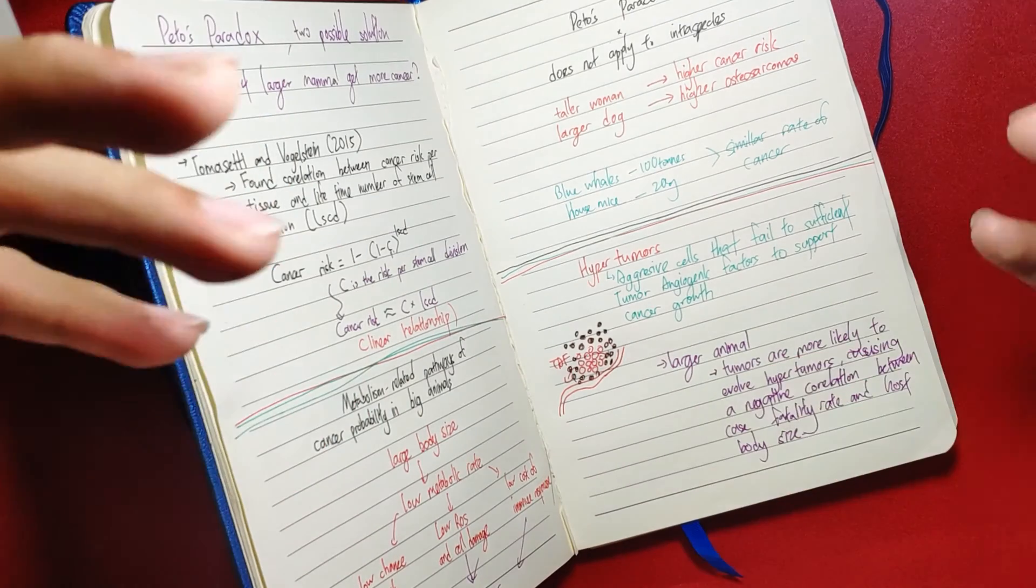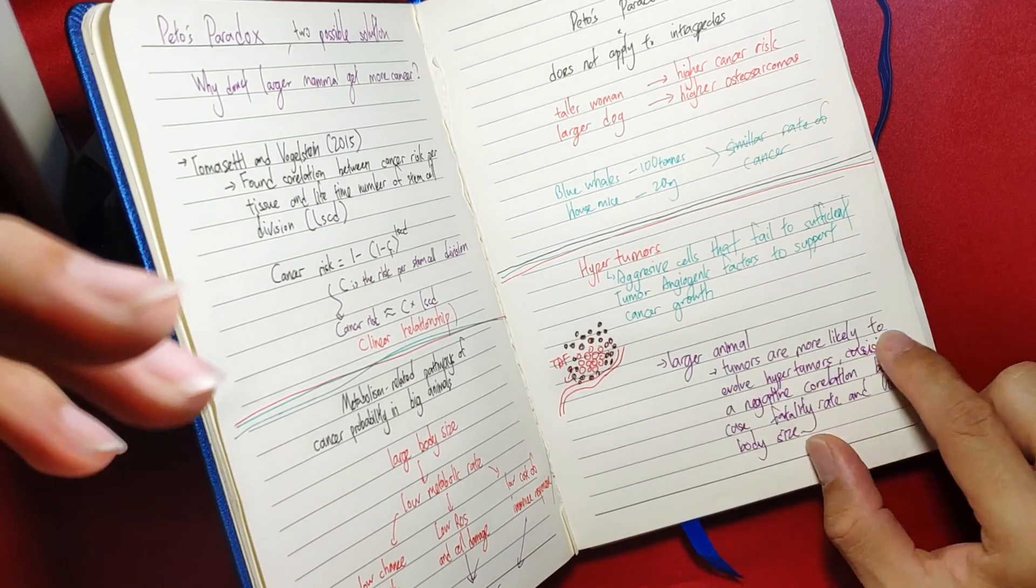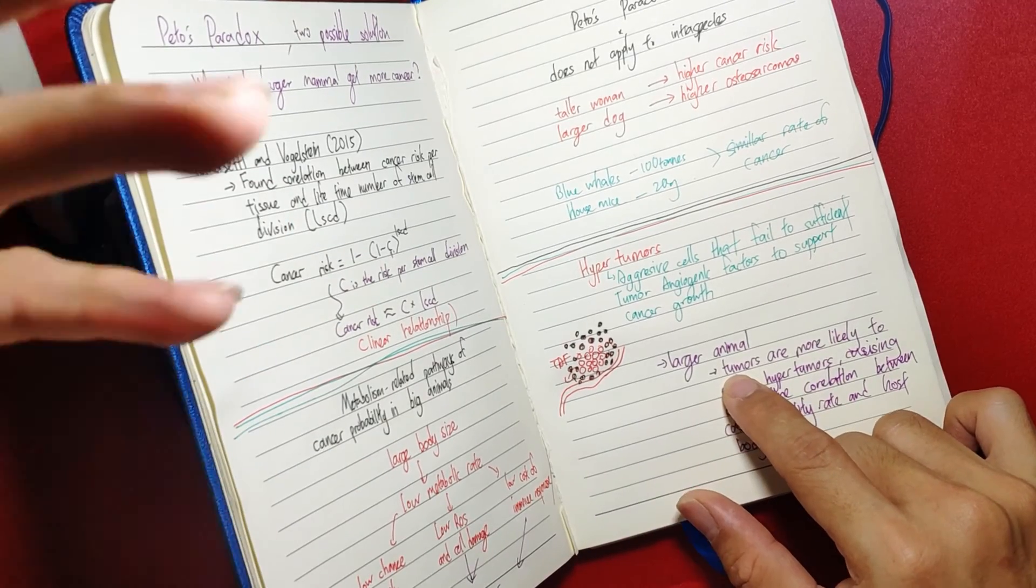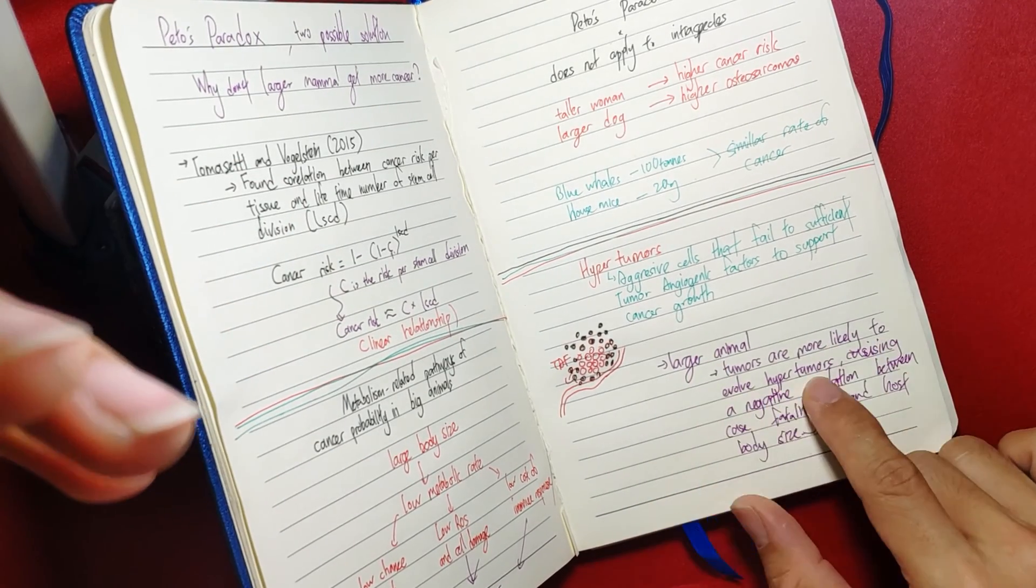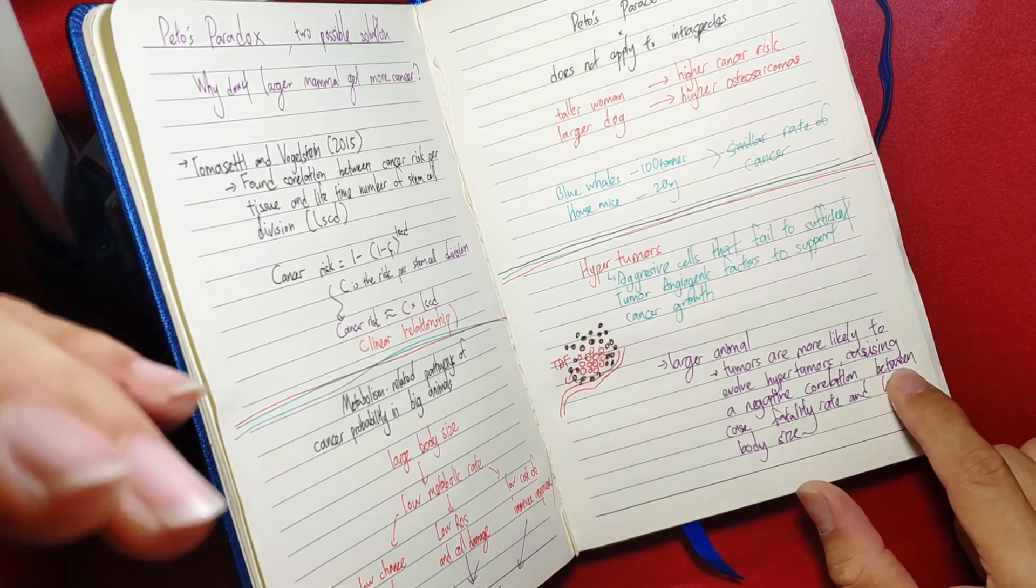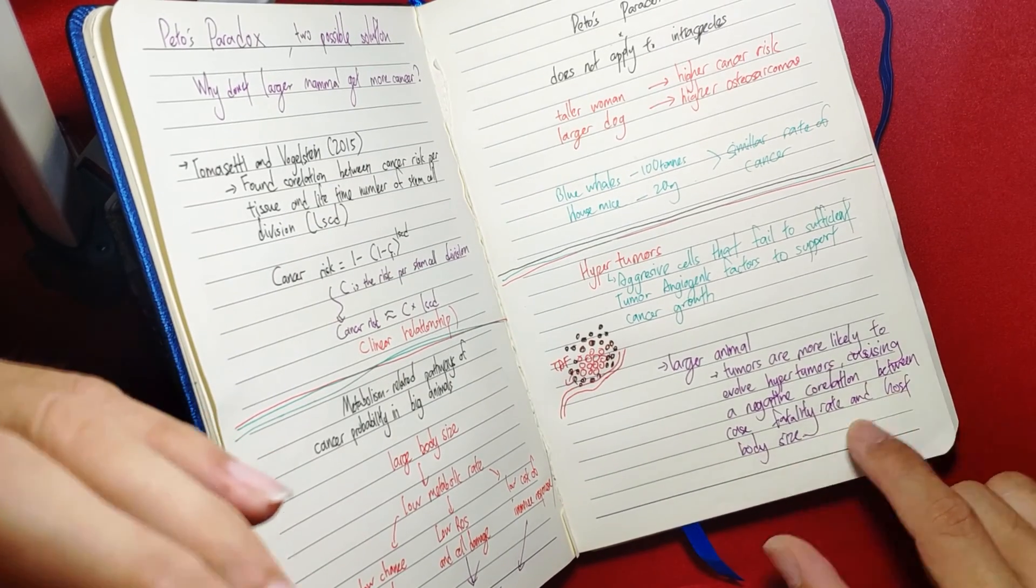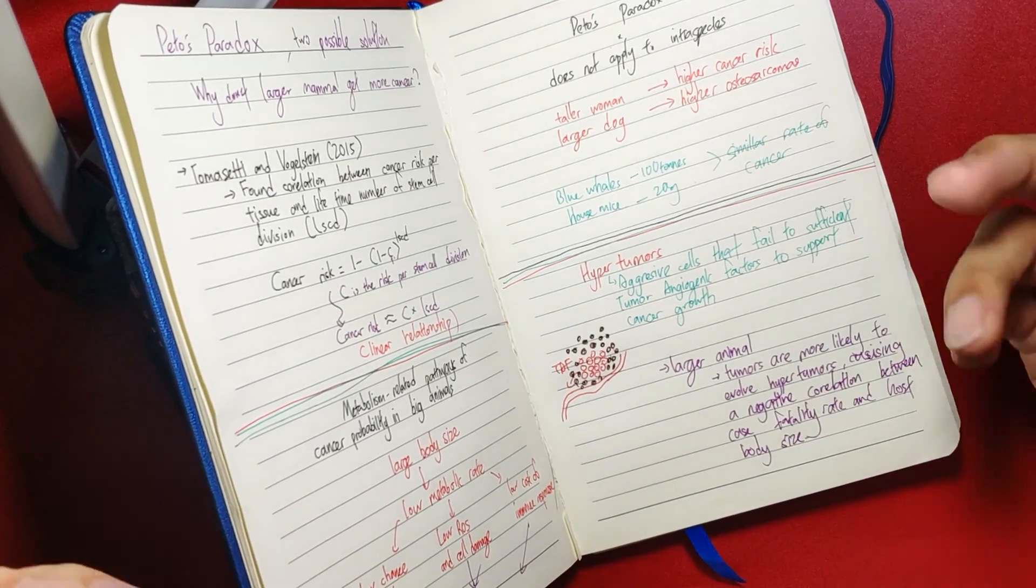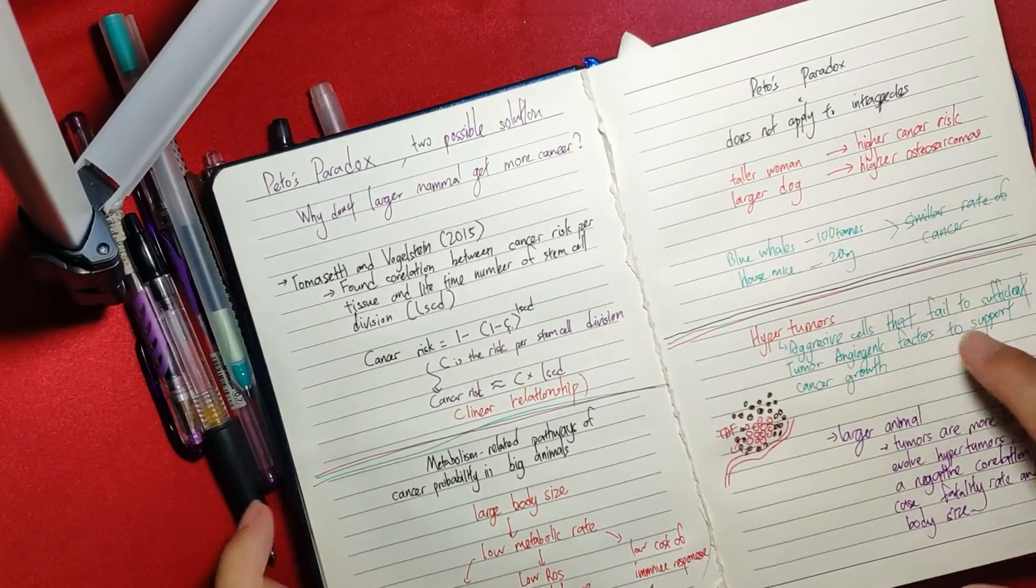If you want the official quote from the article: 'Tumors in larger animals are likely to evolve hyper-tumors, causing a negative correlation between case fatality rate and host body size.' Which is why a lot of big animals get cancer but they do not die.